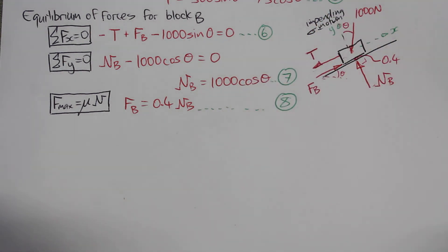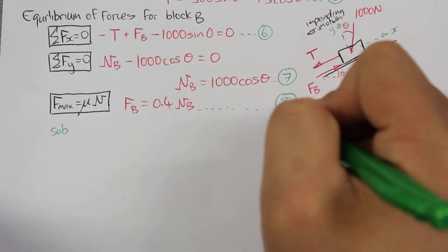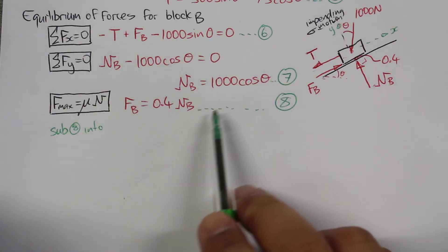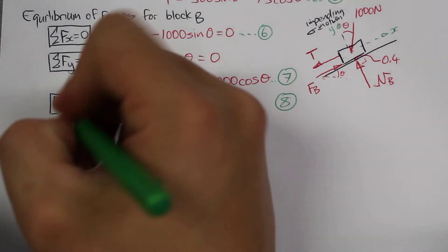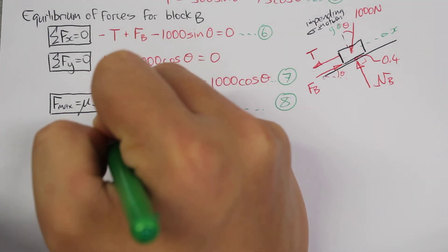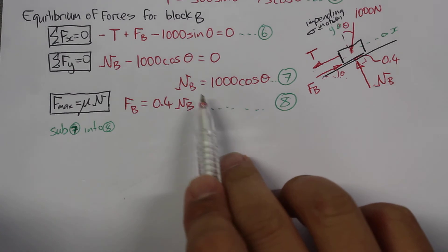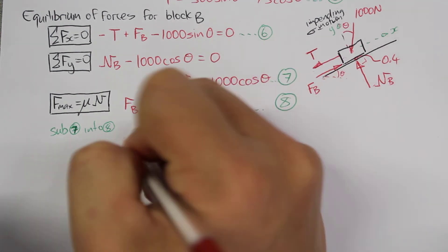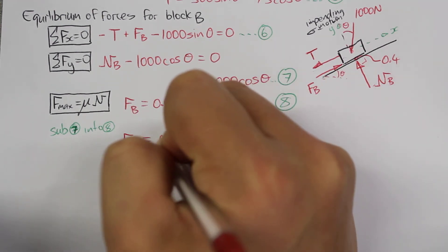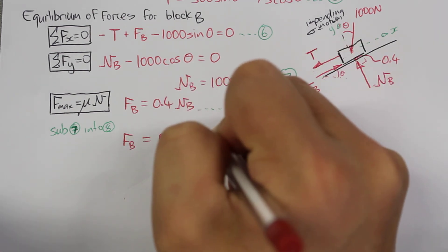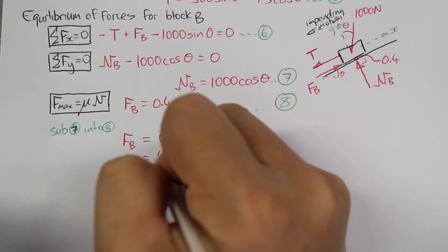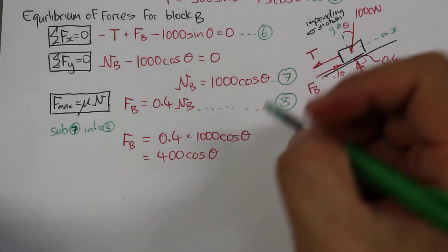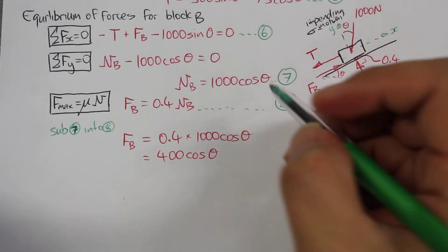Now we'll try to solve that system of equations. We'll substitute equation seven into equation eight. Taking 1000 cosine theta and substituting into equation eight, we get FB equal to 0.4 times 1000 cosine theta, which gives us 400 times cosine theta. We'll call that equation number nine.